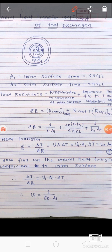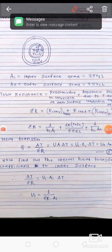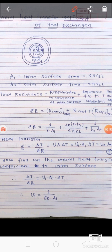To find the convection resistance, we use Newton's law of cooling: Q = H·A·ΔT. Comparing with Ohm's law, the convection resistance is 1/(H·A). For the inner surface, the resistance is 1/(Hi·Ai). The conduction resistance for a cylinder is ln(r2/r1) divided by 2πKL.